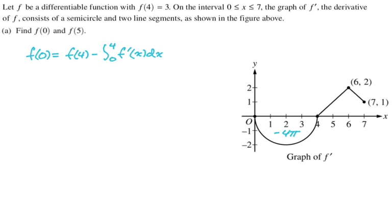So that semicircle has a radius of 2. A circle with a radius of 2 has an area of 4 pi. But then we're taking... Oh, that's weird that I wrote like the wrong thing there. I should have written negative 2 pi there. I'm going to fix that. The full circle would have had an area of 4 pi. This is half of it, so this is 2 pi. And we're below the axis, so negative 2 pi.